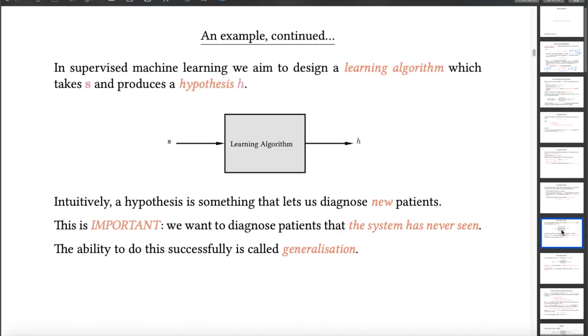Now the key underlying idea with supervised learning is that you want a learning algorithm which takes some training examples and produces a hypothesis, which begs the question, what is a hypothesis? Well, intuitively speaking, in this example it's something that lets us diagnose new patients. And this is a real key aspect of supervised learning. You want the hypothesis that comes out of your learning algorithm to be capable of diagnosing patients, or in general classifying instances, that the system has never seen before. And if it can do that, we say that it generalizes. It generalizes from the specific examples that you have that were used by the learning algorithm to turn training examples into a hypothesis. And it generalizes the knowledge in such a way that h can classify previously unseen things. And the aim of the game is to get generalization.